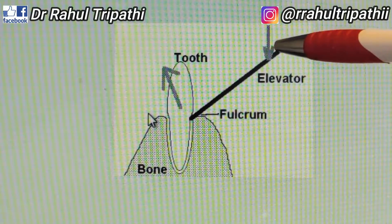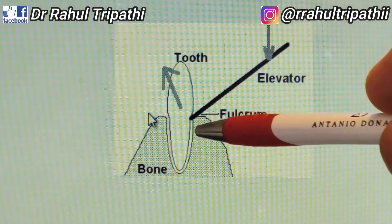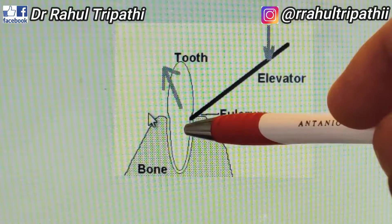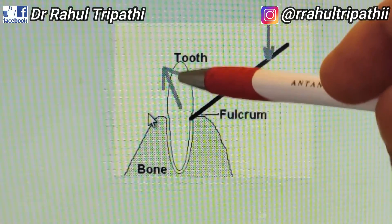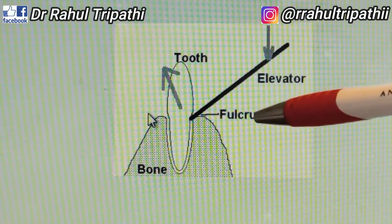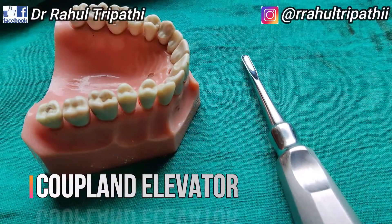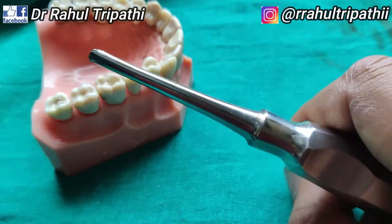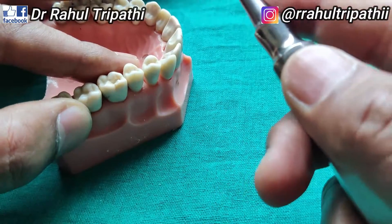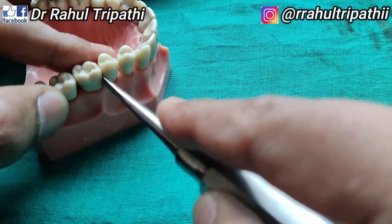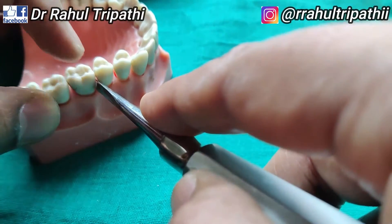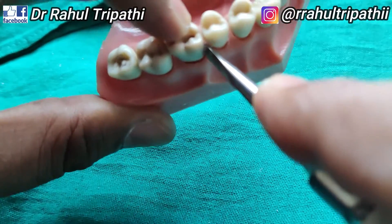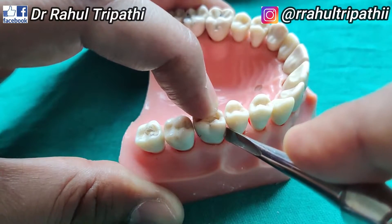When you grip the handle and apply effort, the blade — which is placed between the tooth surface and the bone — acts as your load. When you start applying effort here, the tooth is pushed out. For example, with a straight elevator, if we want to extract the first molar, we apply the lever principle: first grip the handle, then place the blade between the interdental bone and the tooth surface. The adjacent tooth is not used as a fulcrum — the interdental bone serves as the fulcrum.